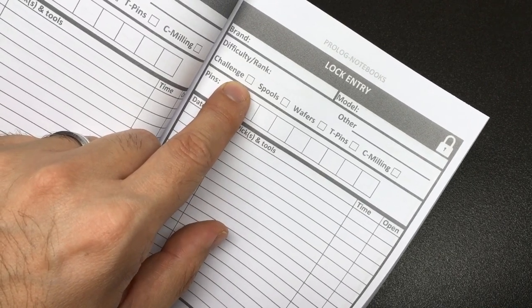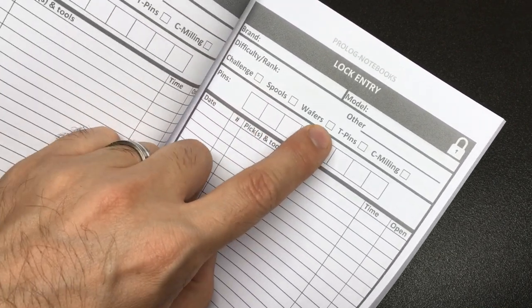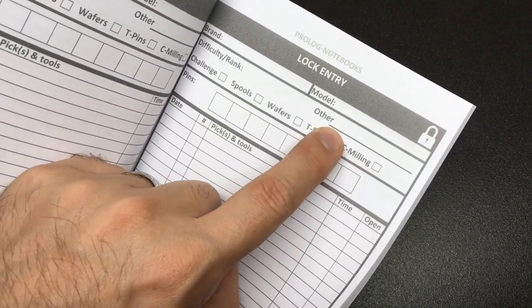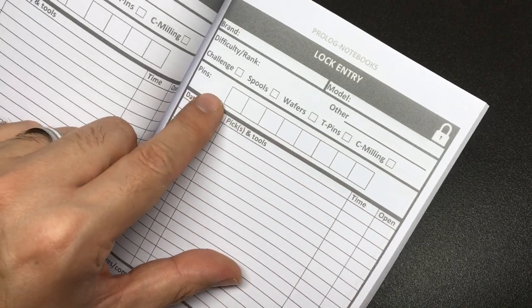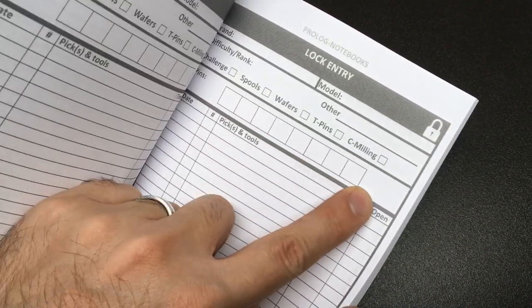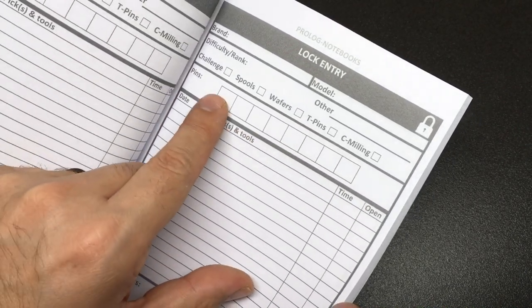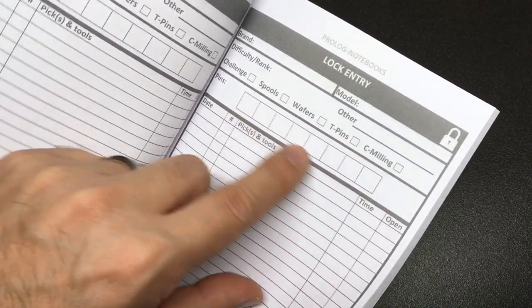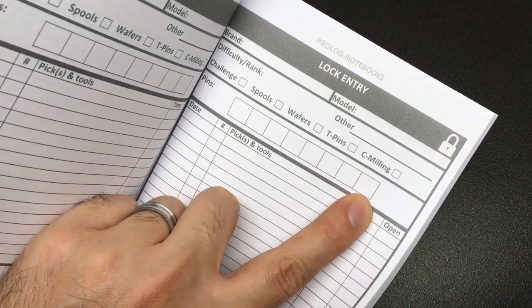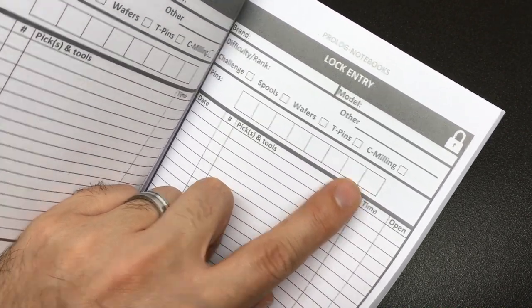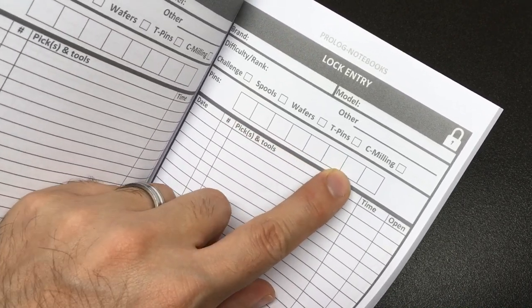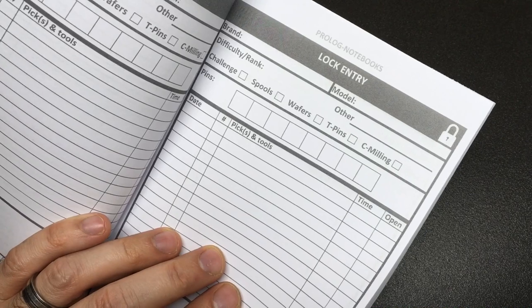Then what type of lock is it? Is it challenge lock? Does it have spools, wafers, T-pins and counter milling? But also, which is quite nice, is other. You have the pins and I guess you could tick each one of these boxes to say that it's a 1 to a 7 pin. You could draw a picture of the pins in order. Actually I'll be honest, that's probably what I would do. I quite like the visual things. So you go pin one is like a standard spool serrated, standard spool serrated. That'd be kind of cool to have a visual representation.